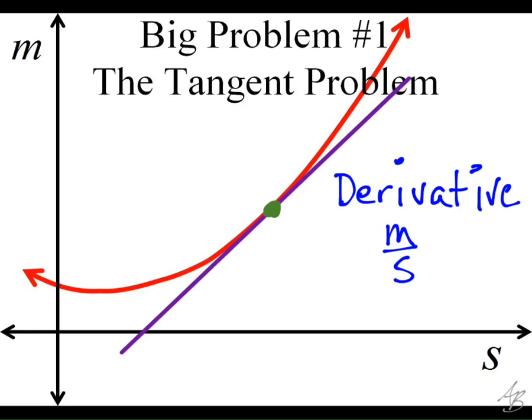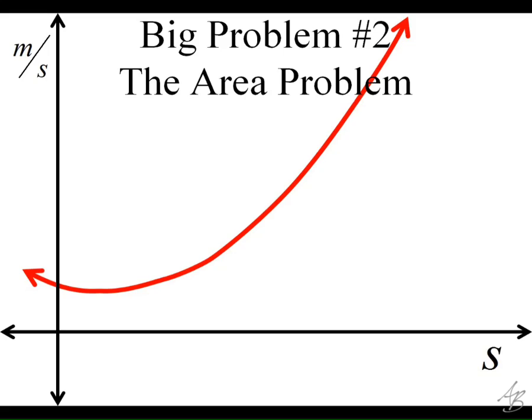Now, if we look at a graph from the perspective of the area problem, and we graph a derivative, let's say in meters per second, with respect to time in seconds, now what we're doing is we're finding an area.